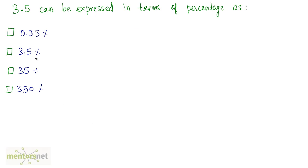Let's move on to the second question. 3.5 can be expressed in terms of percentage as: We have the number, just multiply by 100 to get the percentage. So 3.5 times 100. We'll shift the decimal point two places to the right because we multiplied by 100. So we have 350 percent. Easy questions, right? Let's jump to the next.